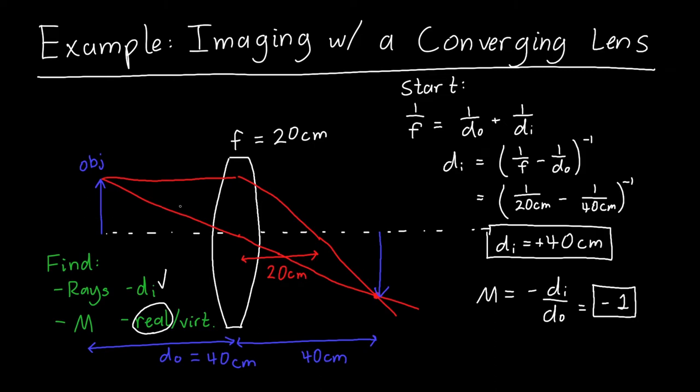Now because I'm freehanding this, this is never going to be perfectly precise. If you measured this, this wouldn't be exactly the same as the object as I've drawn it. But this sketch gives us a good sense of what exactly is going on in this system, why it is that the image is upside down, for example.